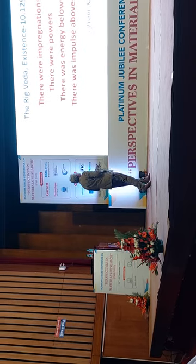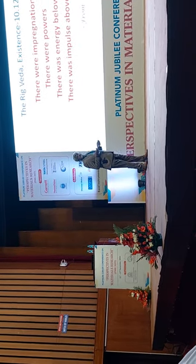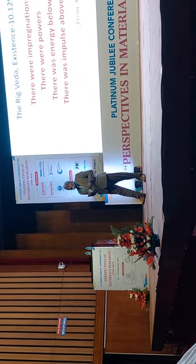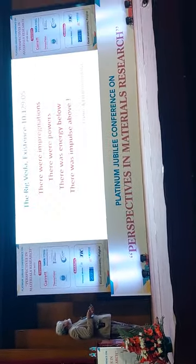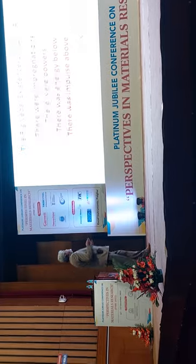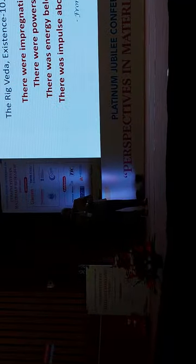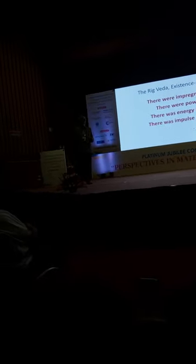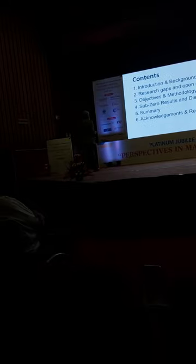Starting with the Rigveda, the 10th Mandala on creation and existence says there were impregnations, there were powers, there was energy below, and there was impulse. This applies to Grishimangala, to instruments, machines, UTS machines — there's energy, power, impulse, and impregnations, like the causes of nanomaterials.